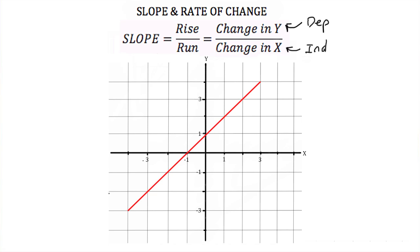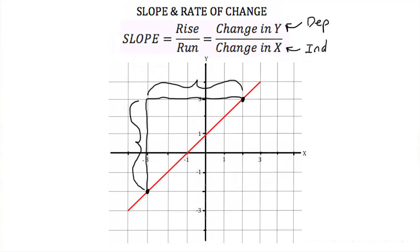Slope, though, is usually used in mathematical principles, especially when we want to find the slope of a line. Let's look at this red line as a linear equation and see if we can find the slope of it. To find the slope, pick two points on the line, preferably points that are easy to find, and count how much you go up and then how much you go over. The amount you go up is called the rise, and the amount you go over is called the run. An easy way to remember the formula for slope is to calculate the rise over the run.